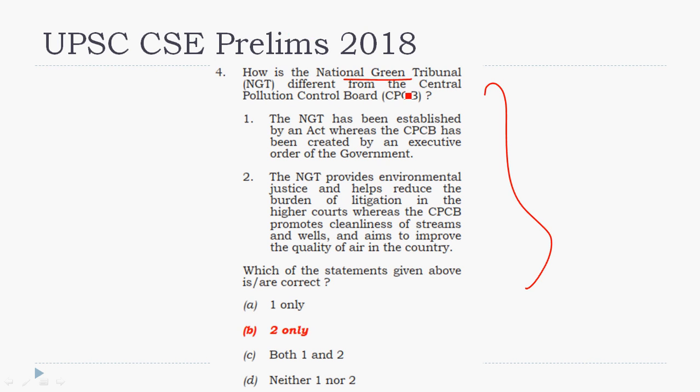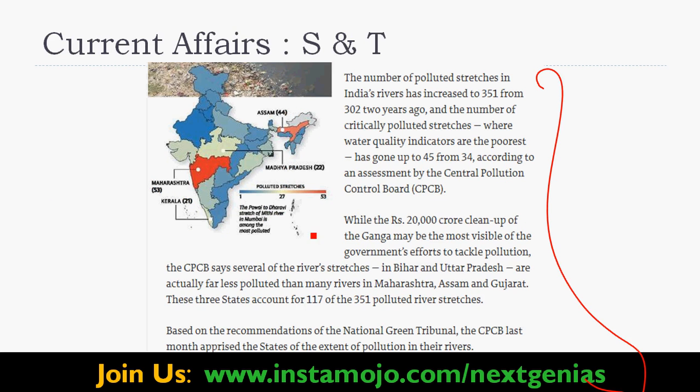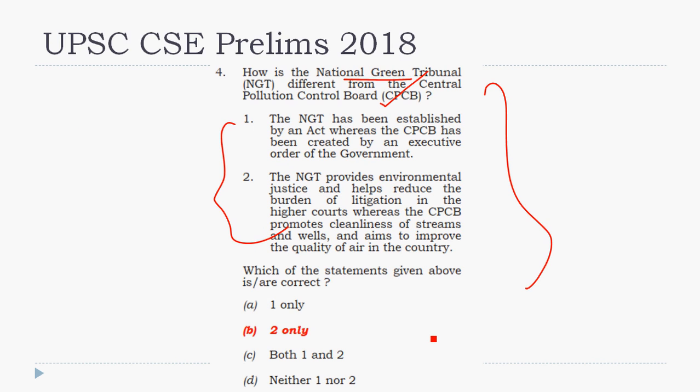Here is a question for the UPSC Civil Services Examination: How is the National Green Tribunal (NGT) different from the Central Pollution Control Board (CPCB)? This is the type of question — a comparison of CPCB and NGT — that you may experience in coming exams. This type of approach is very important. You should focus on NGT and CPCB. If you have questions about your current affairs phase, you should be focused on this type of problem.